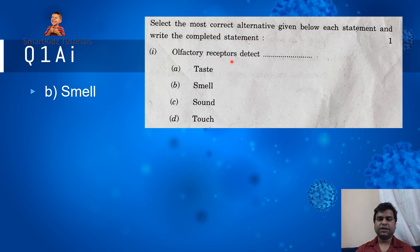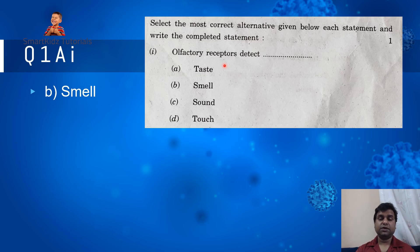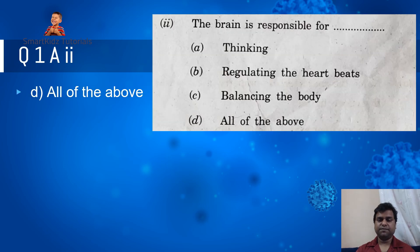The first question under that was: olfactory receptors detect — the choices were taste, smell, sound, and touch. Olfactory receptors refer to the receptors that are present within your nose, so the correct choice is B: smell.